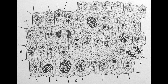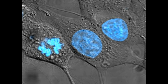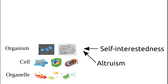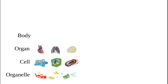Instead of pursuing their own immediate interests, cells began to pursue what was best for the group as a whole. That which is altruism at the level of the cell is self-interestedness at the level of the multicellular organism. Following similar patterns at a higher level, specialization eventually began to occur within multicellular life forms. Organs formed to facilitate digestive systems, circulatory systems, and nervous systems.